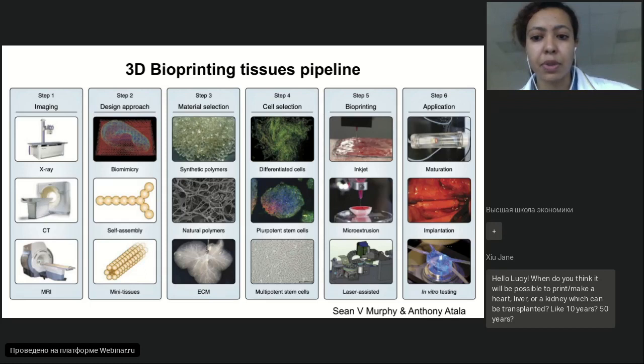The next step is the further application of these printed tissues or organs. You can use a maturation step if you want. Some organs need additional maturation in incubators because they need time for growth after printing. You can also make implantation right after printing for simple tissues like skin or cartilage. And of course, you can make drug testing.